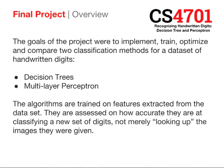The goals of this project were to implement, train, optimize, and compare two classification methods for a data set of handwritten digits: an optimized decision tree and a two-layer perceptron. The algorithms were trained on features extracted from the data set and assessed on how accurately they classify a new set of digits, not simply looking up the images they were given.